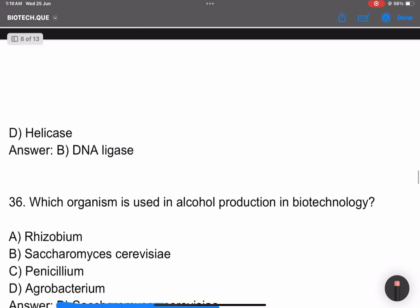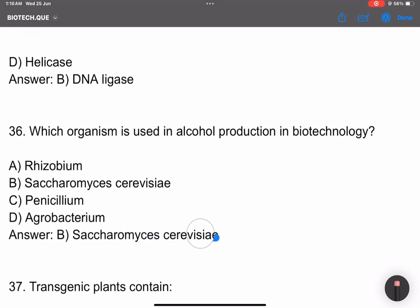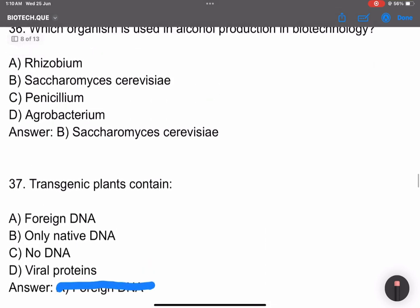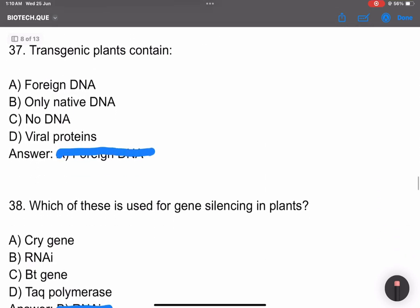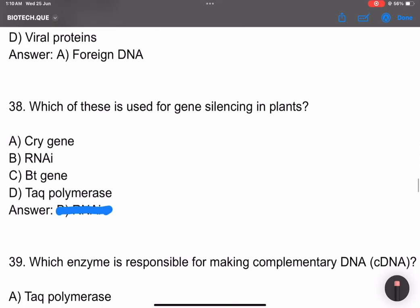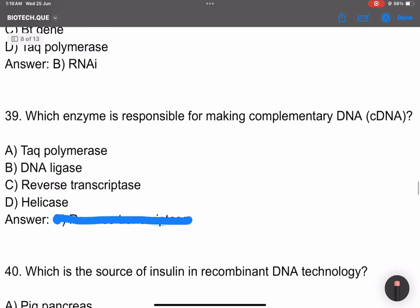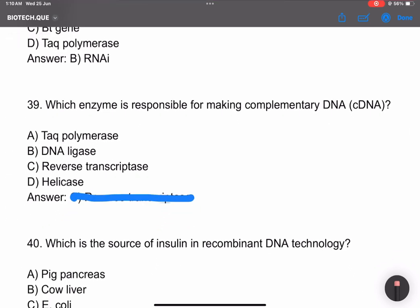Which organism is used in alcohol production? Flavr Savr tomato was developed to delay ripening. A transgenic plant contains foreign DNA. Gene silencing involves RNA interference, which uses double-stranded RNA. Question 39: Which enzyme is responsible for making complementary DNA? Reverse transcriptase.